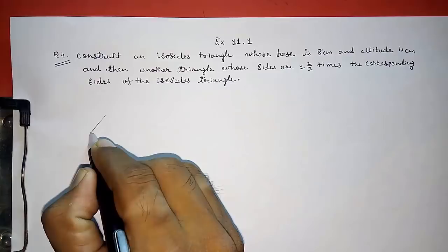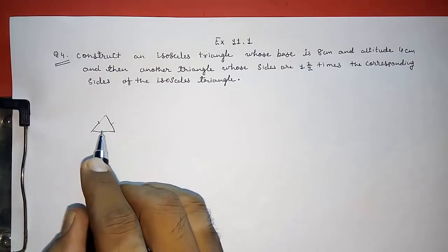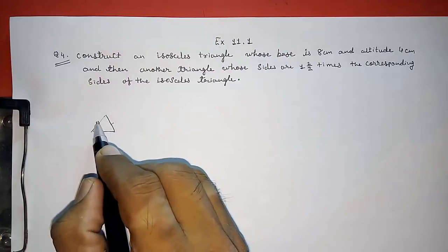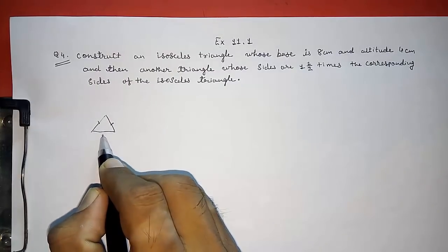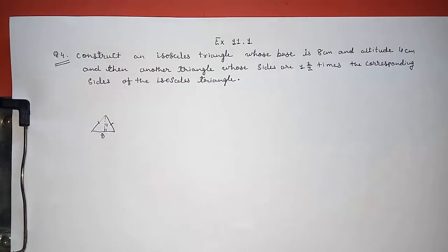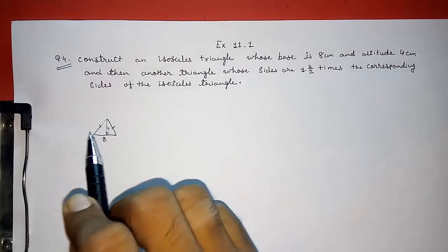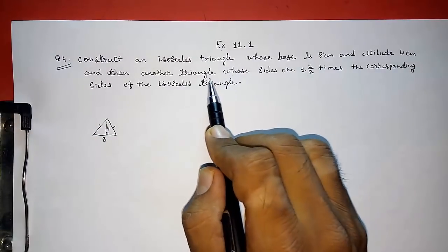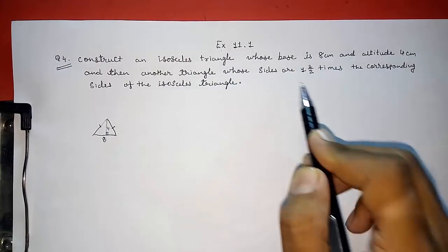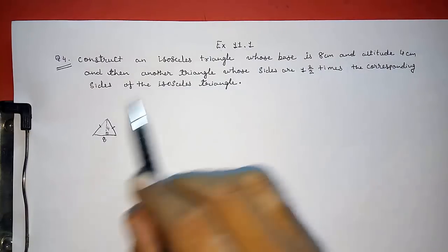First we have to draw an isosceles triangle. I am drawing a rough figure here. You can see two sides are equal but they had not given us this side, they had only given us the base and the altitude that is 4 cm. So first we are going to construct that triangle and then we have to draw another triangle that is 1½ times this triangle.